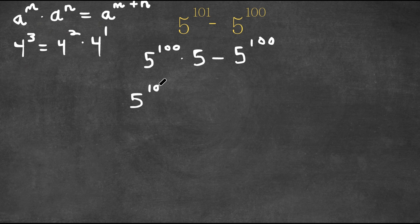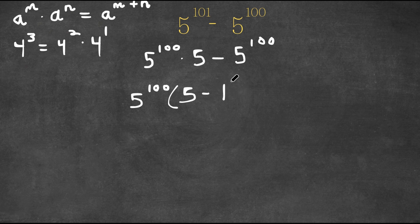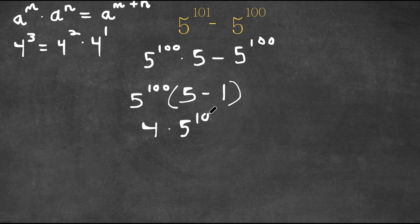So we have 5 to the power of 100 times 5, divided by 5 to the power of 100, which is simply 5. Minus 5 to the power of 100 divided by 5 to the power of 100, which is 1. So we get 5 to the power of 100 times (5 minus 1), which equals 4 times 5 to the power of 100. And this is our answer.